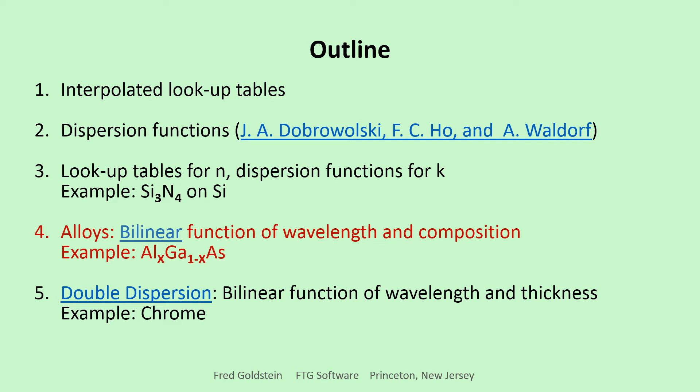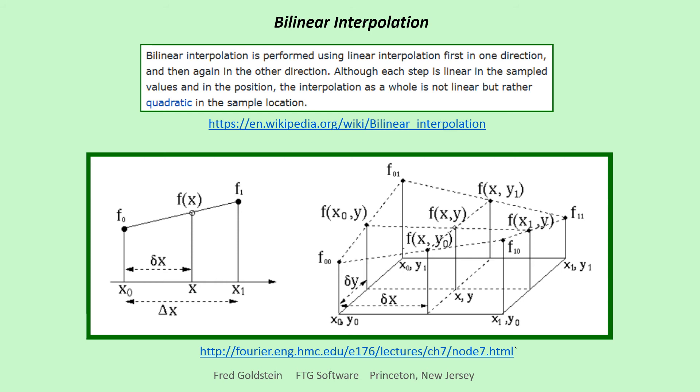Starting with N and K data for discrete X, bilinear interpolation allows us to predict N and K for any wavelength and aluminum fraction within defined ranges. X then serves as an optimization variable, enabling us to determine an aluminum fraction best meeting design requirements.